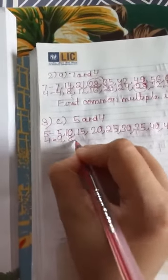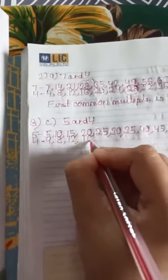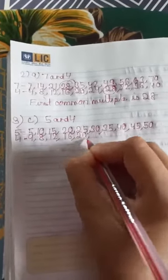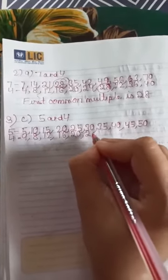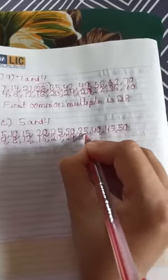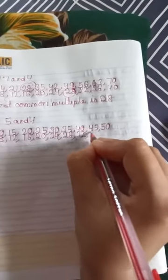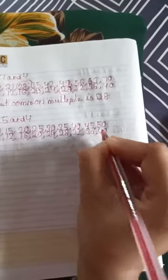Now write the table of 4: 4×1 is 4, 4×2 is 8, 4×3 is 12, 4×4 is 16, 4×5 is 20, 4×6 is 24, 4×7 is 28, 4×8 is 32, 4×9 is 36, 4×10 is 40.